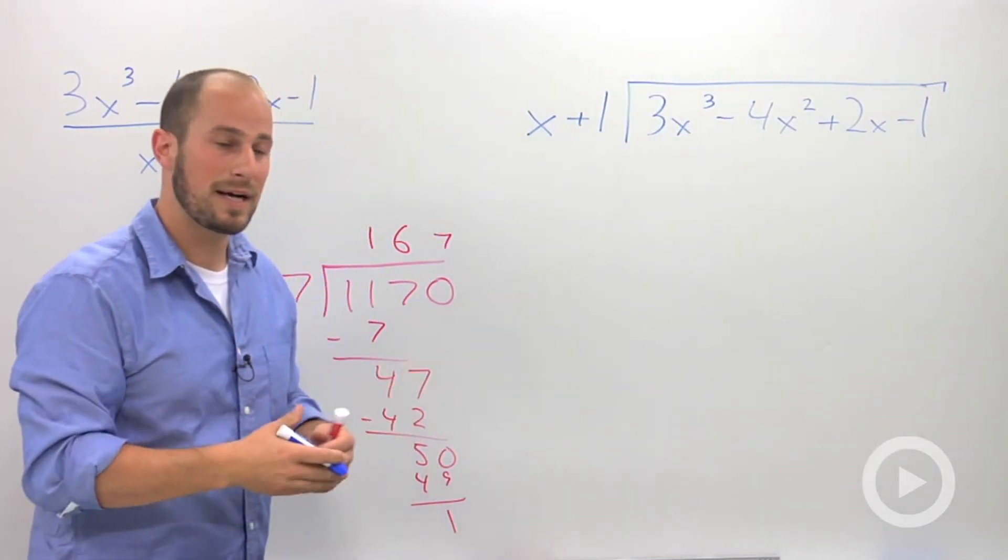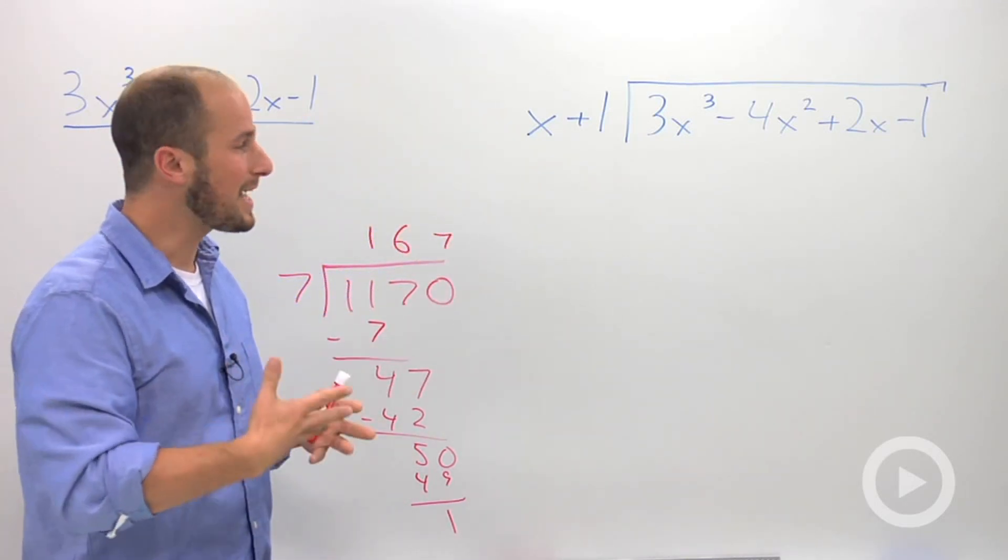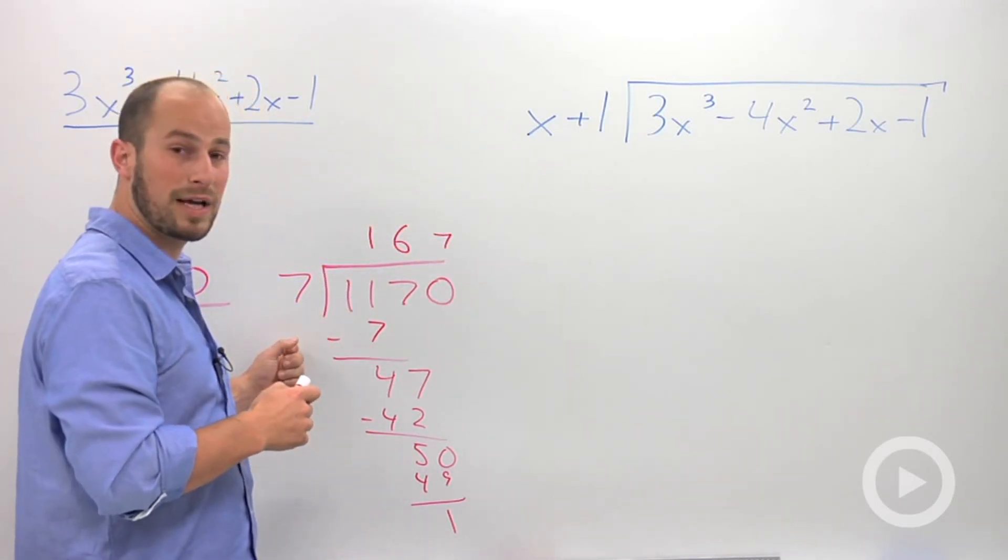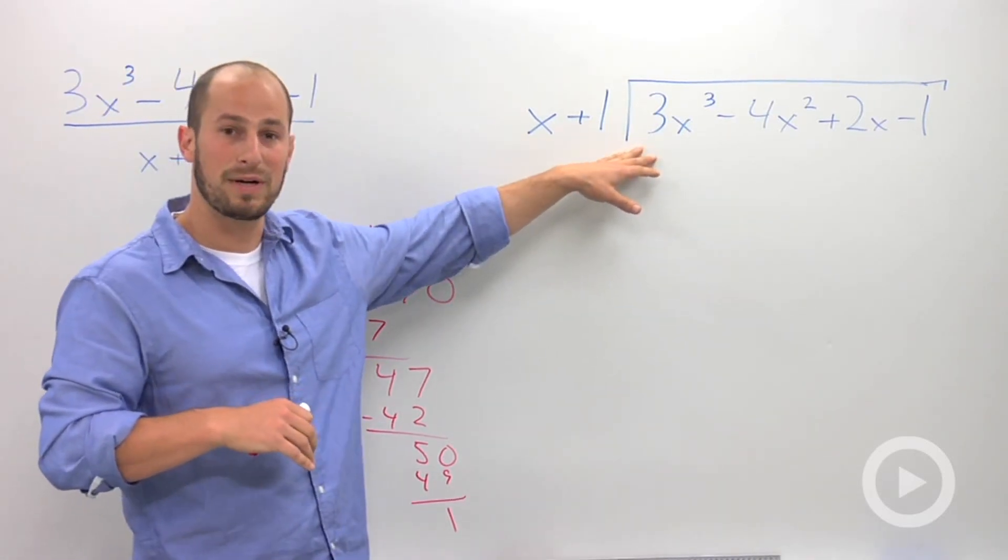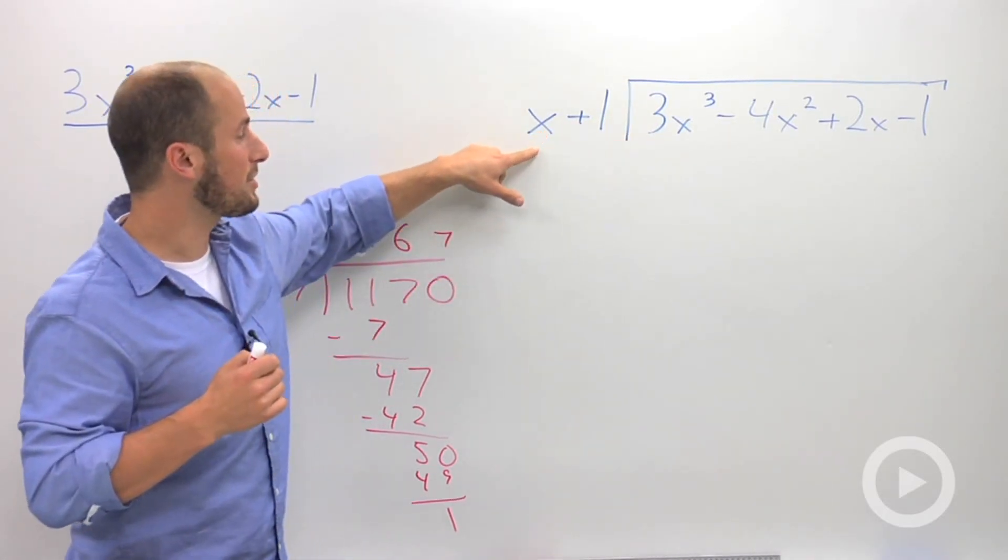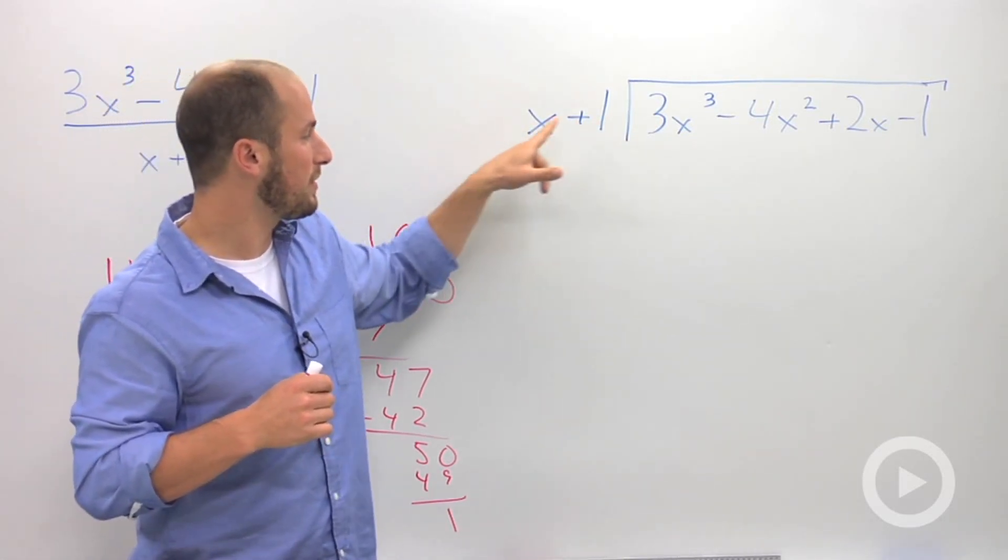So we basically are rewriting our problem as a fraction in long division. And the logic is exactly the same as we did right here. Okay? You say the first thing you want to get rid of is the 3x squared. And we look at our leading term on our divisor, the term in the bottom. Okay? In order to get 3x squared from x, we need to multiply it,